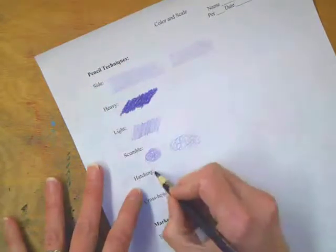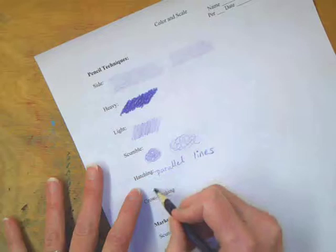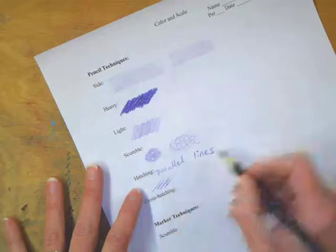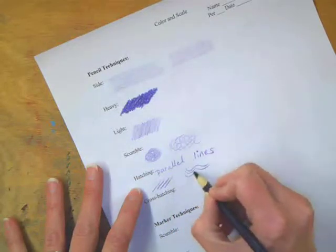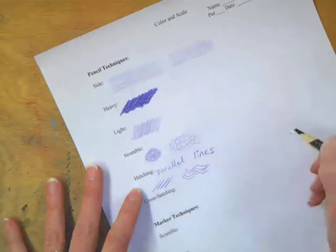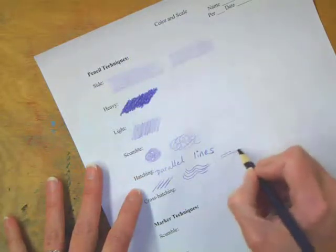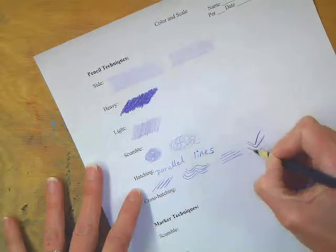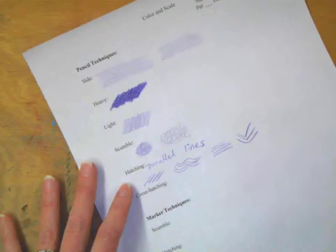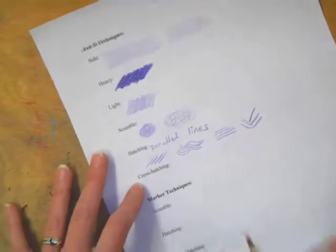Hatching is parallel lines. They might be diagonal and straight, they might be wavy. So they're parallel though. It doesn't matter what kind of lines you make, as long as they are parallel, or close to parallel. This is art, they don't have to be perfect.